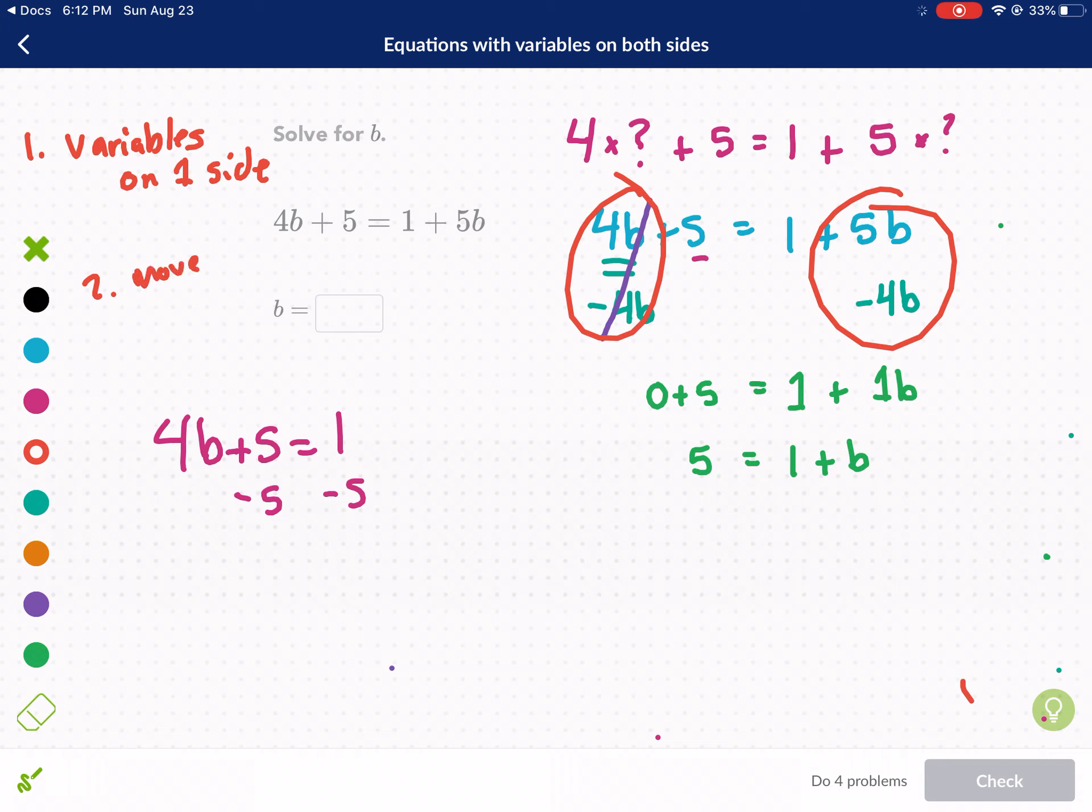They just all have to be on one side. And the second thing is I think it's always easier to move the smaller coefficient. So here we saw that we had two variables. Coefficient. Here we saw that we had two coefficients.